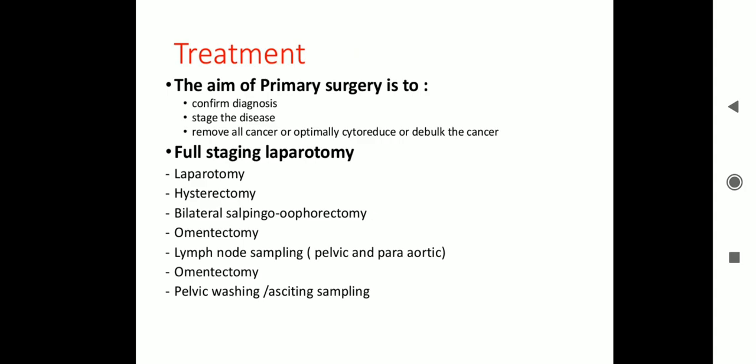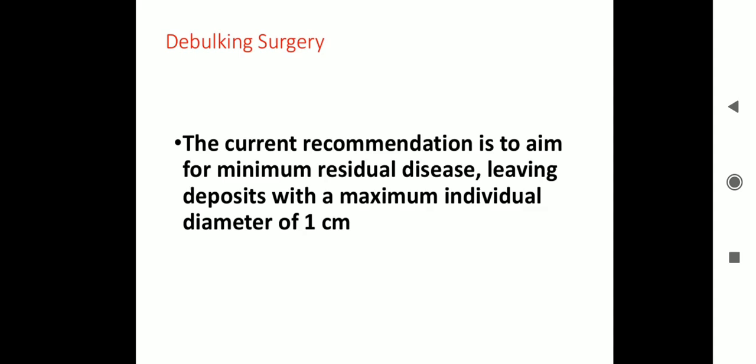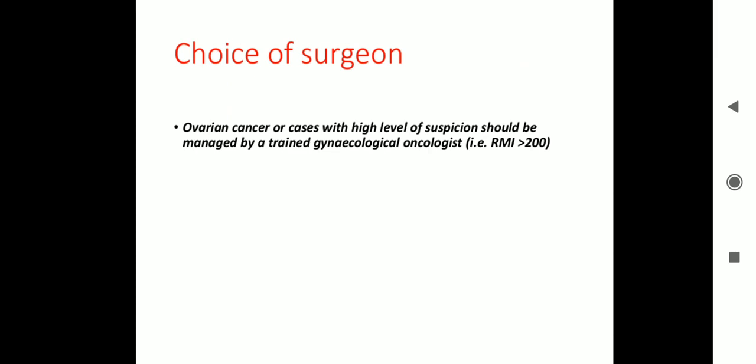Treatment: the aim of primary surgery is to confirm the diagnosis, stage the disease, and remove all cancer or optimally cytoreduce/debulk. Surgical options include full staging laparotomy, hysterectomy, bilateral salpingo-oophorectomy, omentectomy, lymph node sampling, and pelvic washing or ascites sampling. The current recommendation for debulking surgery is to aim for no residual tissue. Ovarian cancer cases with high level of suspicion should be managed by a trained gyneco-oncologist.